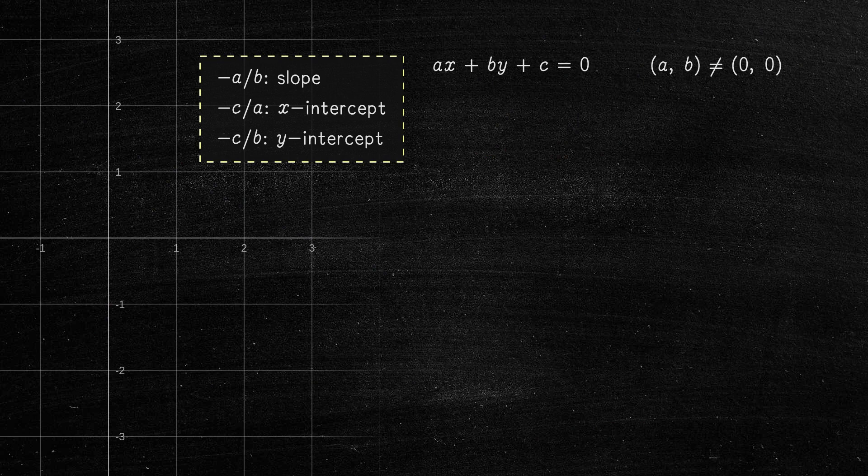And minus C over B is the y-intercept. For example, suppose we want to find the intersection of two lines defined as follows.